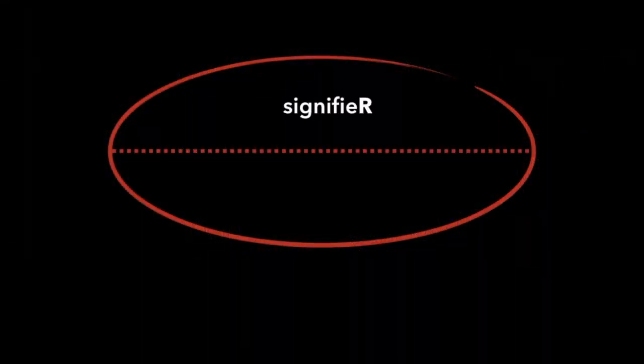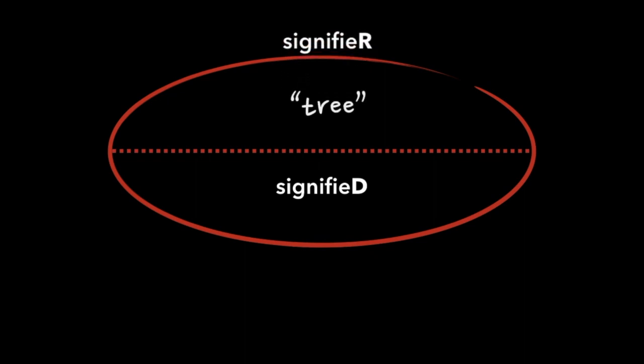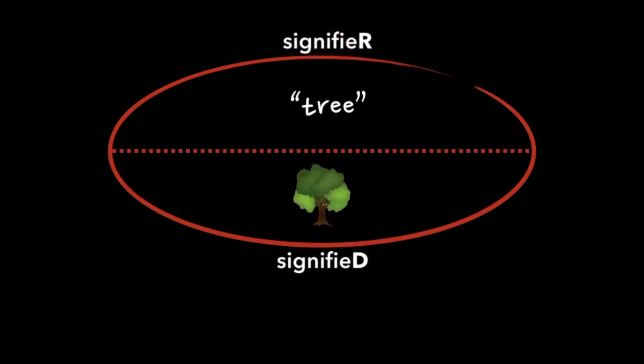How does what's in an image create meaning? Before I tell you how Barthes answers this question, I need to explain where he's coming from. He was primarily a semiotician, and one of the most fundamental concepts of semiotics is the sign. The sign describes the relationship between two components of communication: the signifier and the signified. In language, an example of a signifier is the word 'tree.' The signified is what the signifier is referring to — it could be a specific physical tree, the general concept of tree-ness,